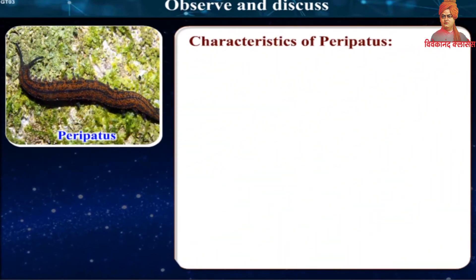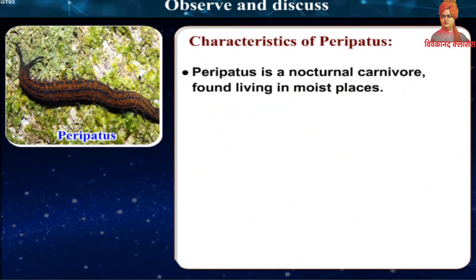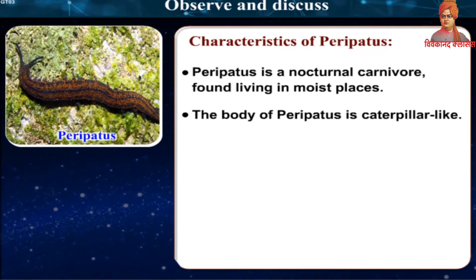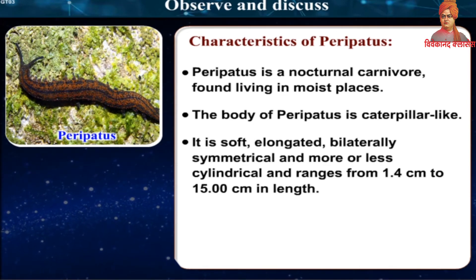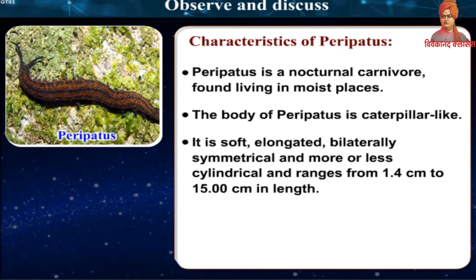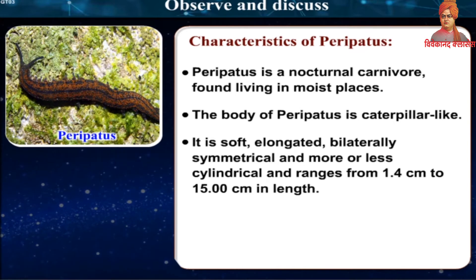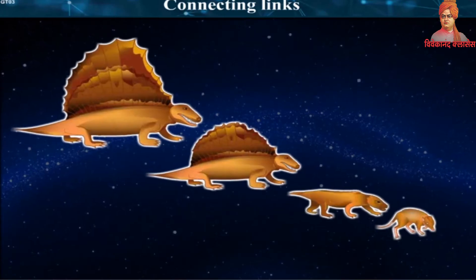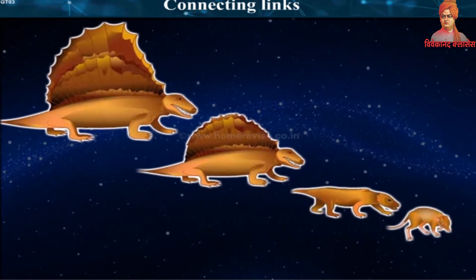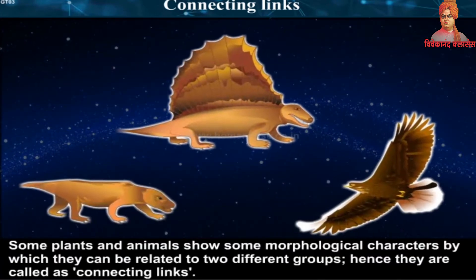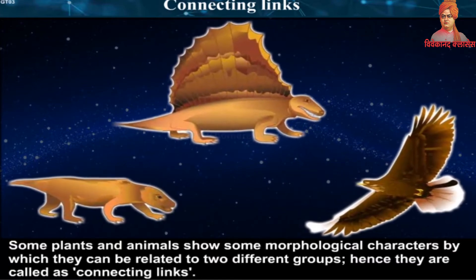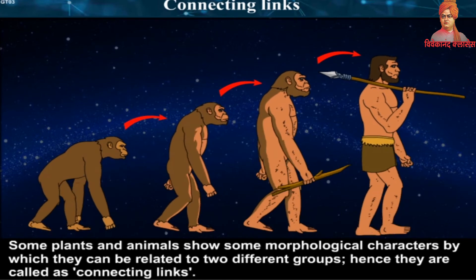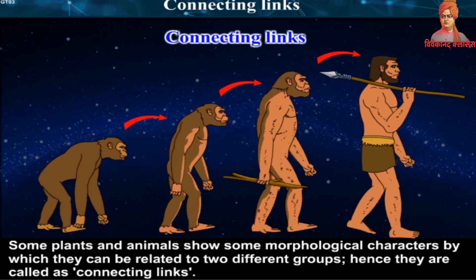Peripatus is a nocturnal carnivore found in moist places. The body of Peripatus is caterpillar-like — soft, elongated, bilaterally symmetrical and more or less cylindrical, ranging from 1.4 cm to 15 cm in length. Some plants and animals show morphological characters by which they can be related to two different groups — hence they are called connecting links.